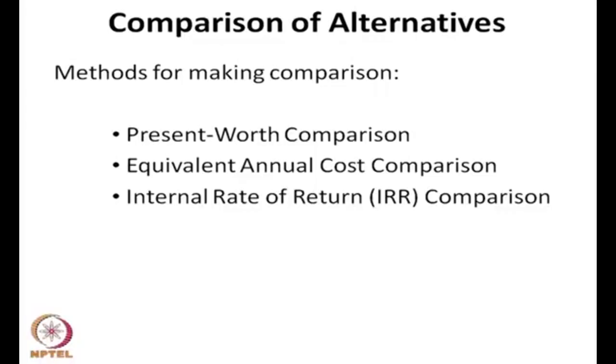If you recall, in the last two lectures we discussed about time value of money and comparison of alternatives. We had defined rate of return and minimum attractive rate of return, and then we developed 6 interest formulae where we related the first cost to a series of equal payments and to the final sum.